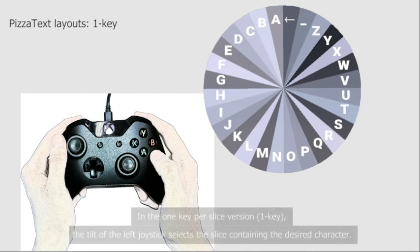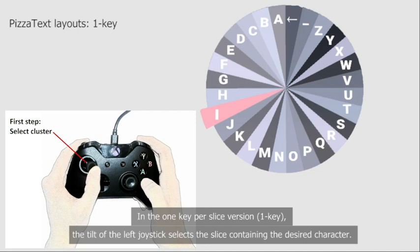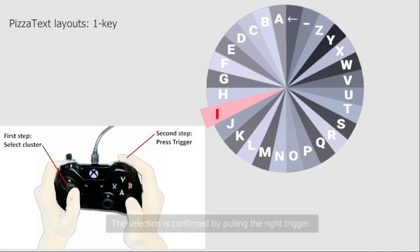In the one-key per slice version, the tilt of the left joystick selects the slice containing the desired character. The selection is confirmed by pulling the right trigger.